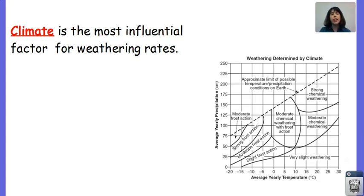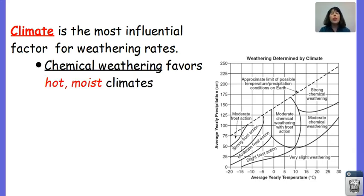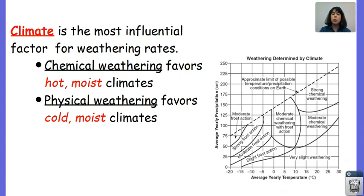So in areas that tend to be very hot and humid, or hot and wet, hot and moist, we have a lot of chemical weathering. While in regions that are very cold and wet, we tend to have a lot of physical weathering. And it makes sense for these two to have that happen.